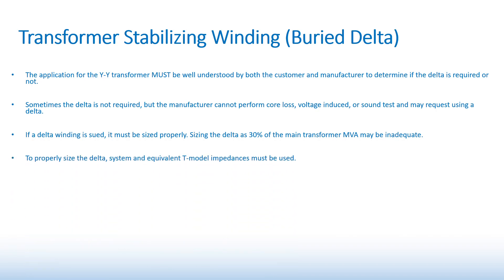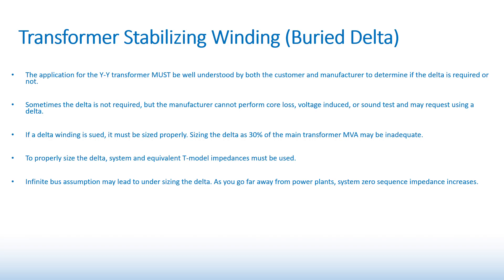To properly size the delta winding, system and equivalent T-model impedances must be used — specifically positive, negative, and zero sequence impedances. An infinite bus assumption may lead to undersizing the delta winding. As you go farther from the power plants, system zero sequence impedance increases and can lead to higher currents that the delta winding has to handle.